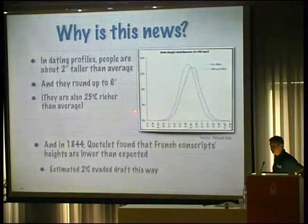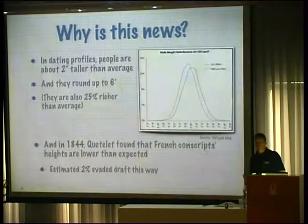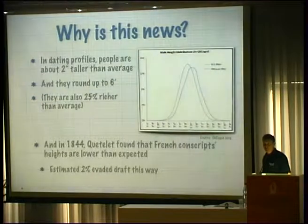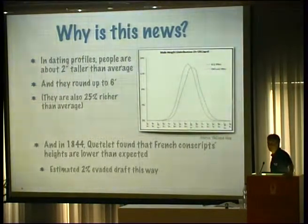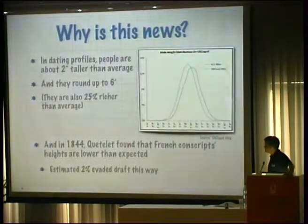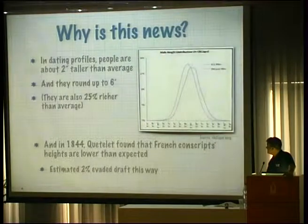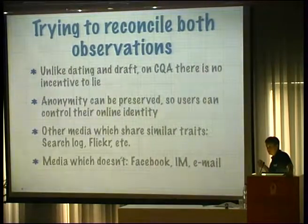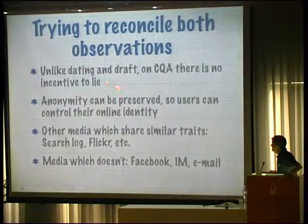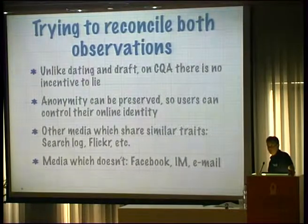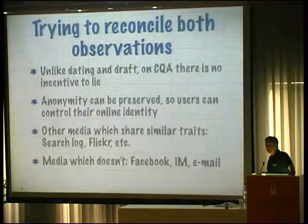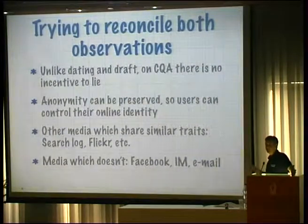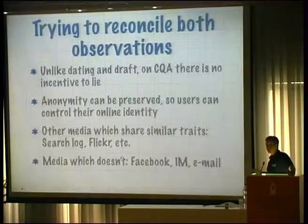Here's an example from a dating site where people looked at the height that US males report on their profile cards. On average, they report themselves to be five centimeters taller than the average — which is statistically impossible. Why is this happening? Think about the incentive. On a dating site, you want to get more dates, therefore you want to appear more attractive. In the US, that means you need to appear taller and richer. So there's some psychological or cognitive process that skews the average up.